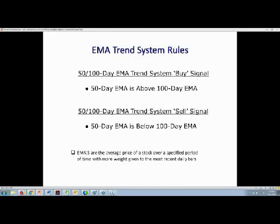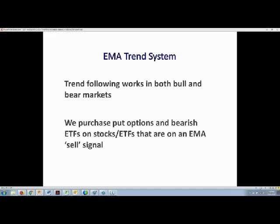Step one is to determine the price trend of a stock using the 50- and 100-day exponential moving averages. If the 50-day EMA is above its 100-day EMA, then that stock is on a buy signal. If the 50-day EMA is below the 100-day EMA, then that stock is on a sell signal. Trend following works in both bull and bear markets. In the last two bear markets, we purchased put options and bearish ETFs on stocks that were on an EMA sell signal.